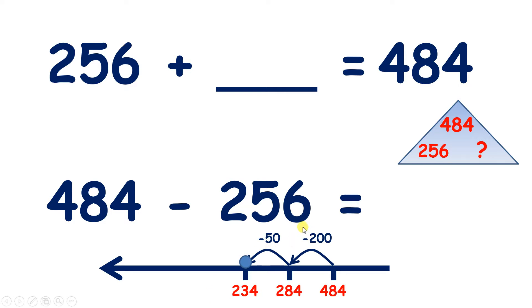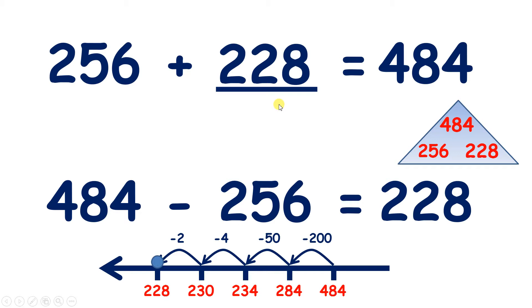Now we need to subtract 6 units. So if we go back 4 units, we get to 230, and then subtracting another 2 takes us to 228. So we've subtracted 6 altogether, and we have 228. So 228 is the missing number, which means that 256 plus 228 equals 484.